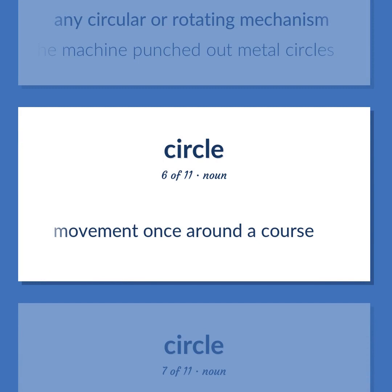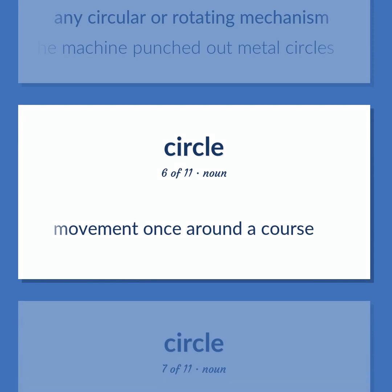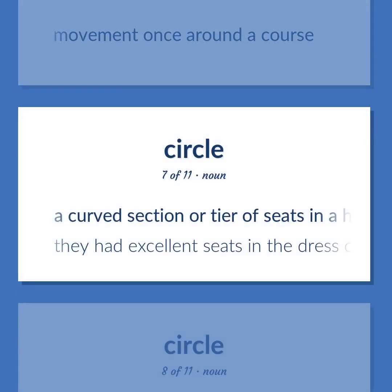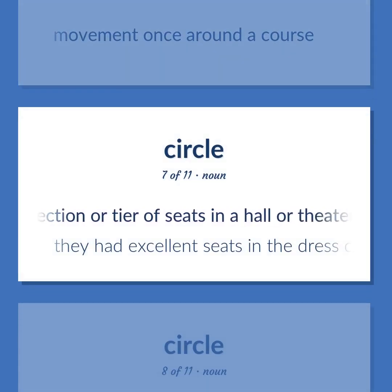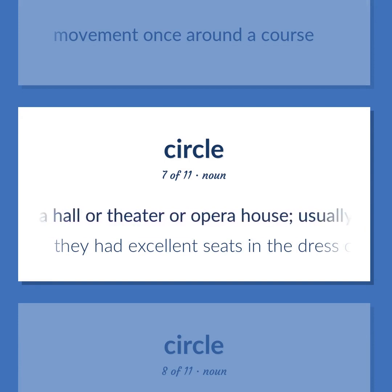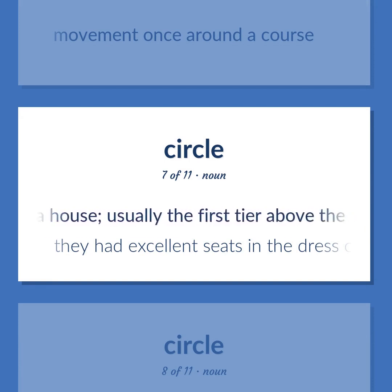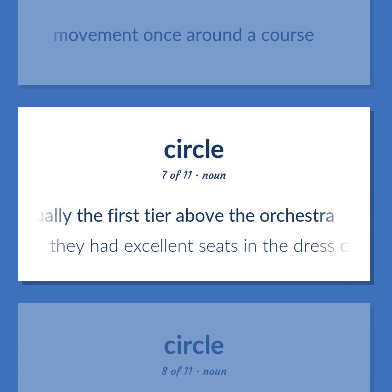Circle: movement once around a course. A curved section or tier of seats in a hall, theater, or opera house — usually the first tier above the orchestra. Example: They had excellent seats in the dress circle.